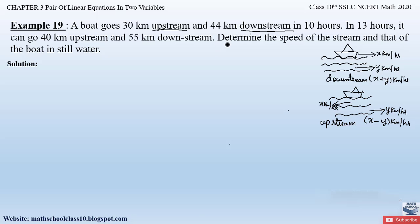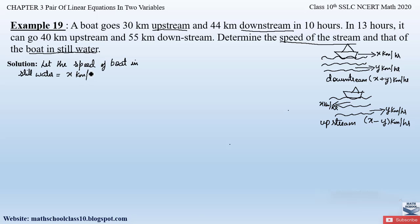Now let us come back to the question. We have to determine the speed of the stream and that of the boat in still water. Let us assume the speed of the boat in still water to be x kilometers per hour and the speed of the stream to be y kilometers per hour.